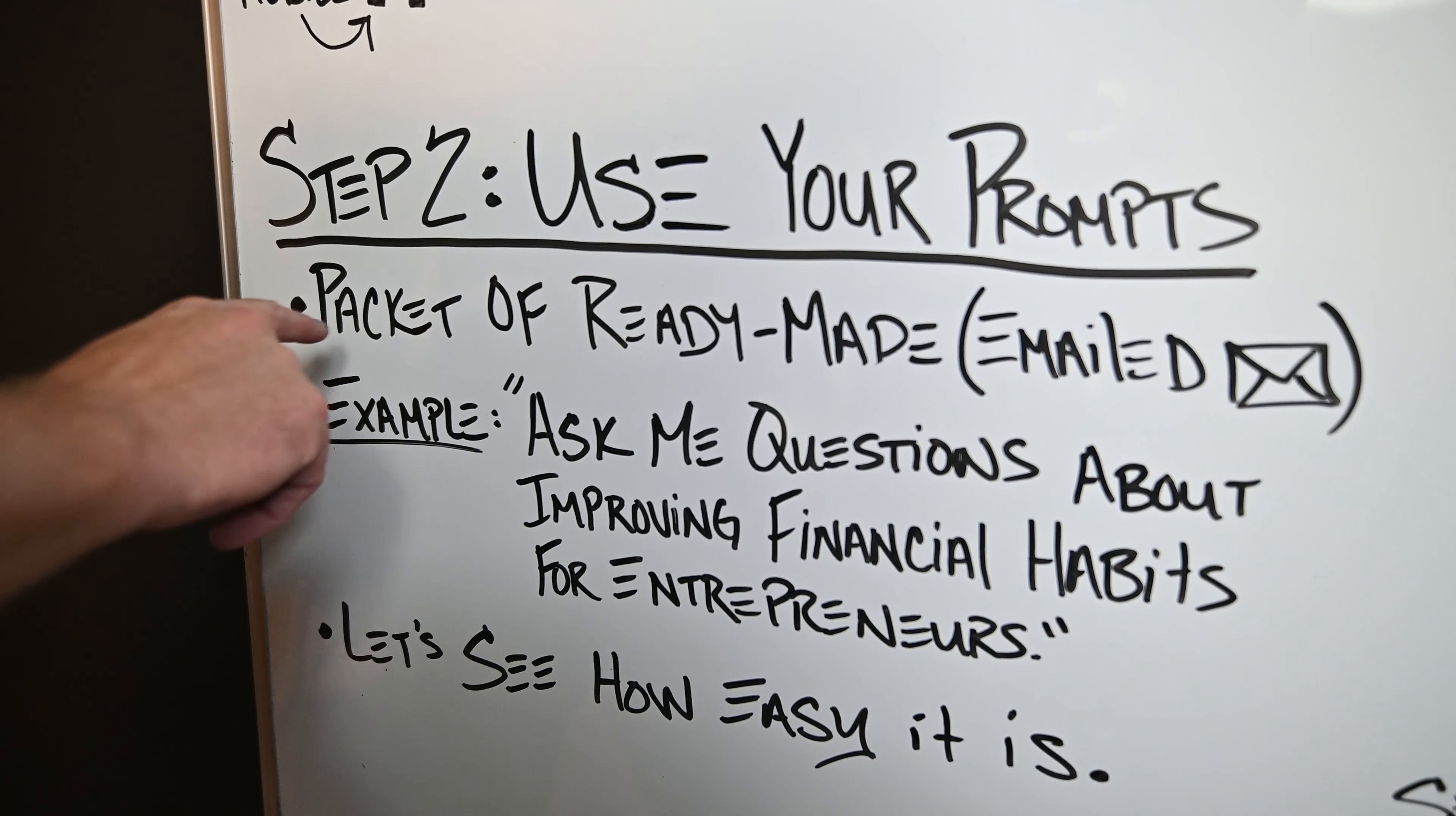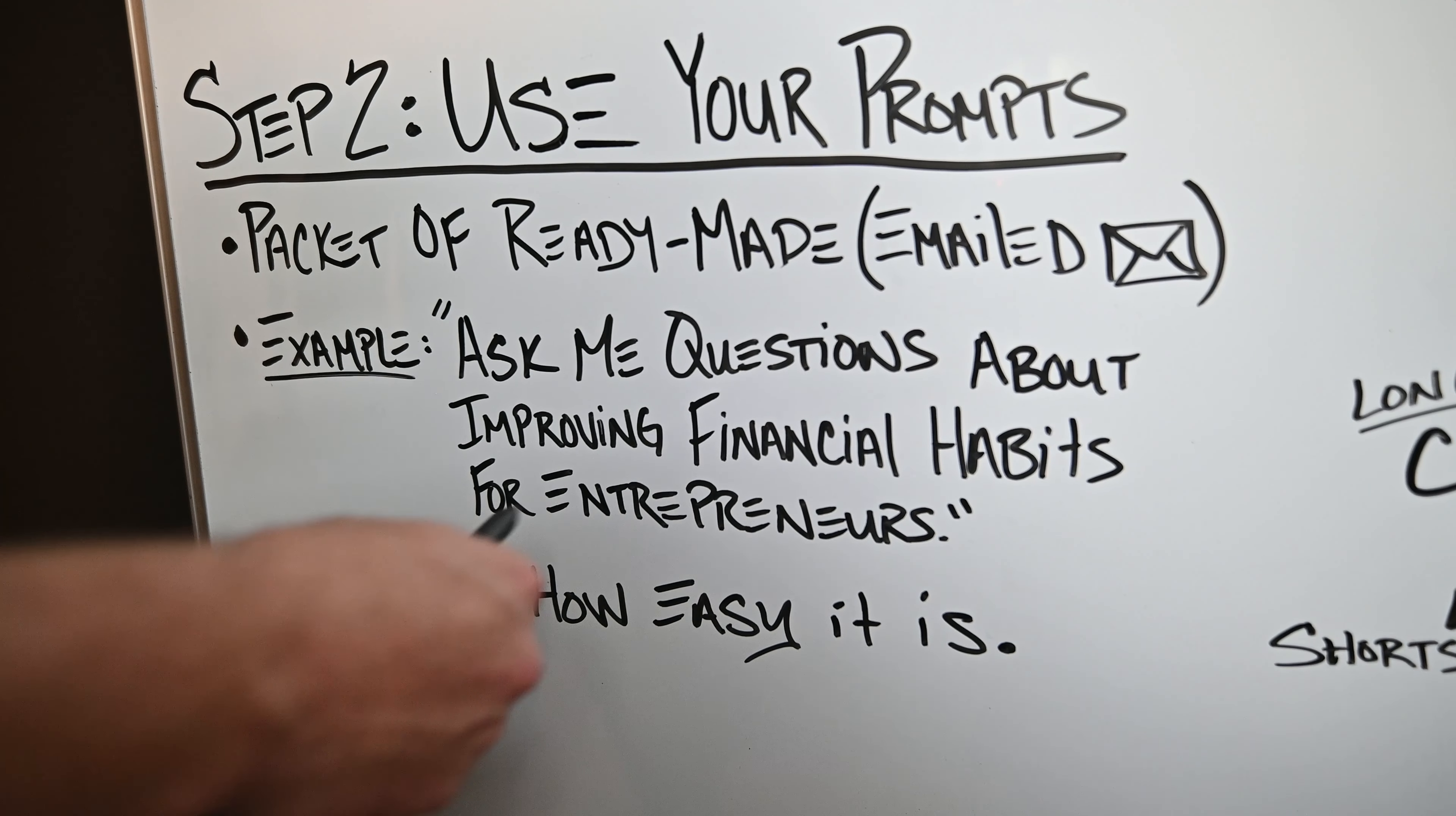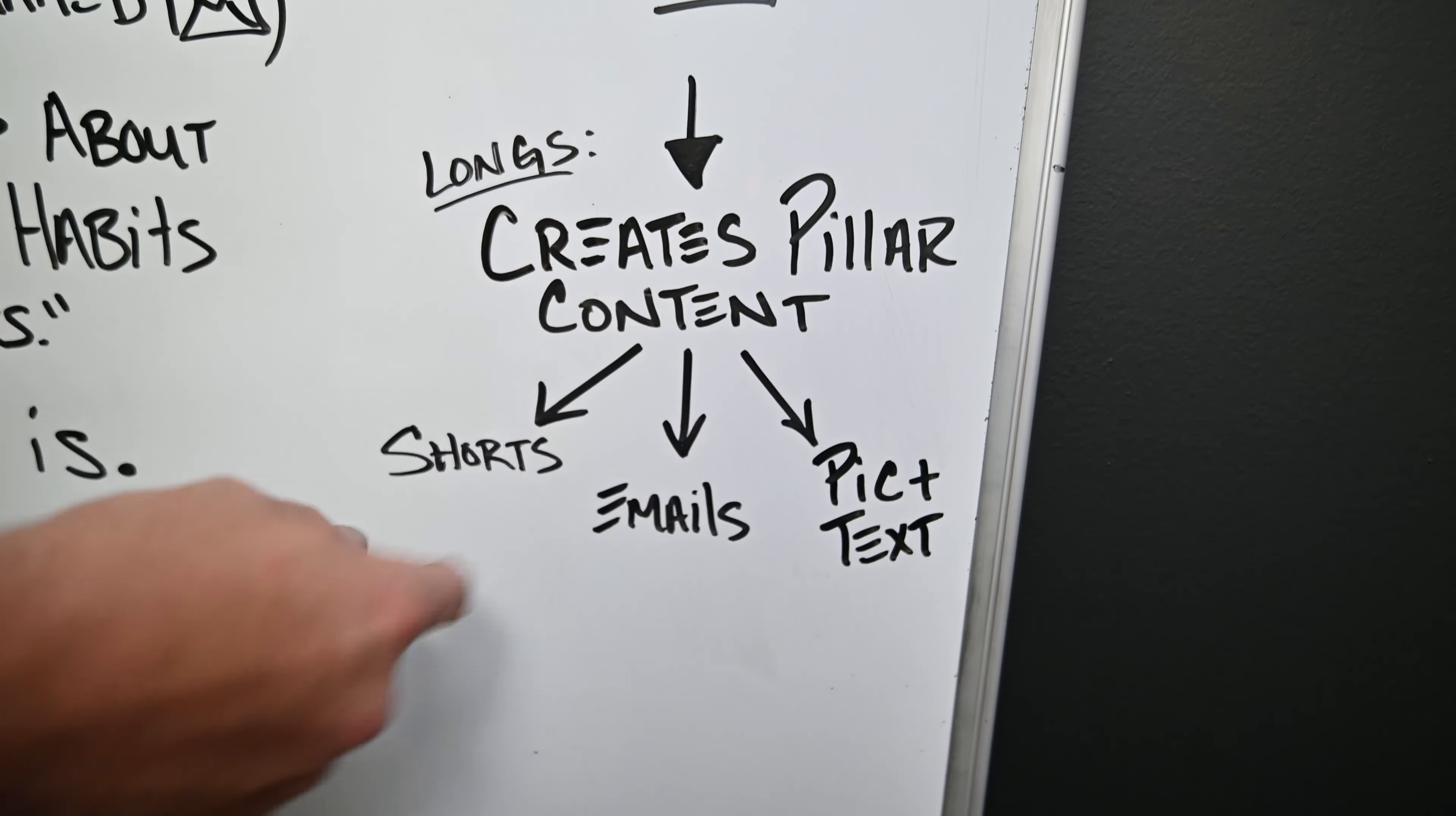Step two, you're going to basically take these prompts that I've given you and just use these prompts. I've already created the prompts for you, so you get a packet of ready-made prompts. They either got emailed to you or they're down below in the resources section, depending on where you're watching this, or it's in the description somewhere. Let's say you're in the financial space, like you're in the wealth niche—ask me questions about improving financial habits for entrepreneurs. What I would add to the back of that is, because I'm creating a YouTube long video that I'm going to be using to create pillar content, and this pillar content I'm going to then repurpose into short form, emails, pics with text.